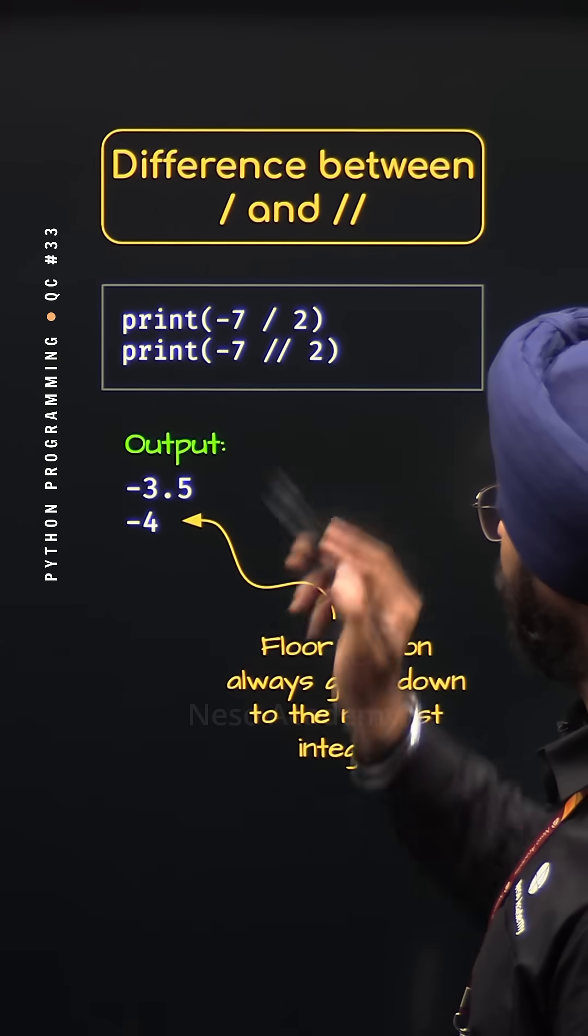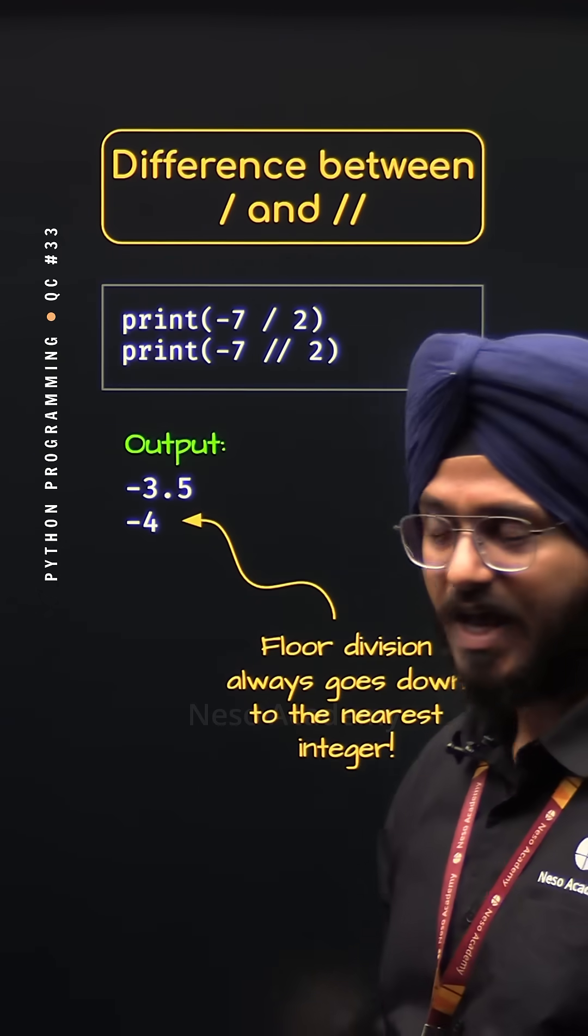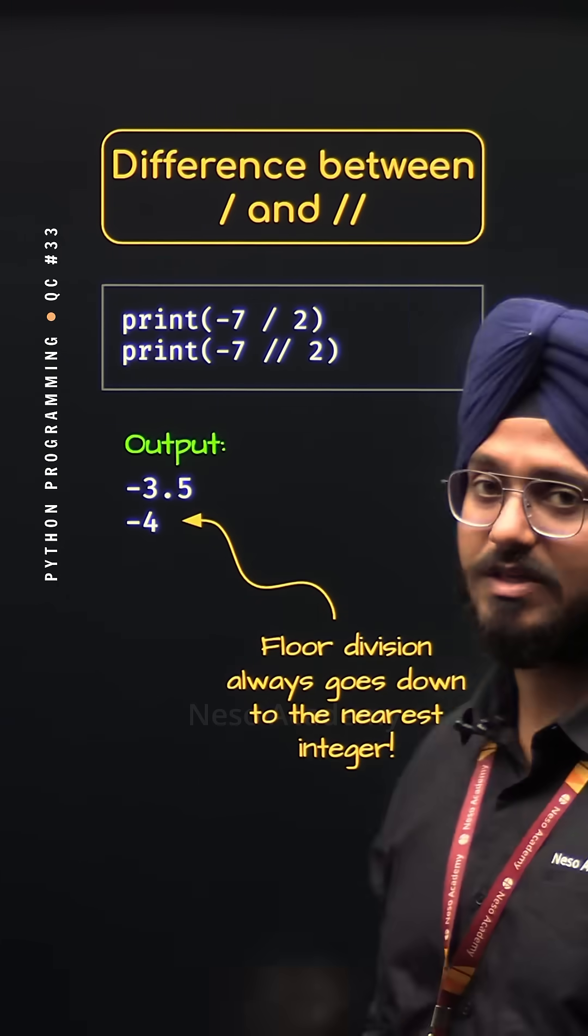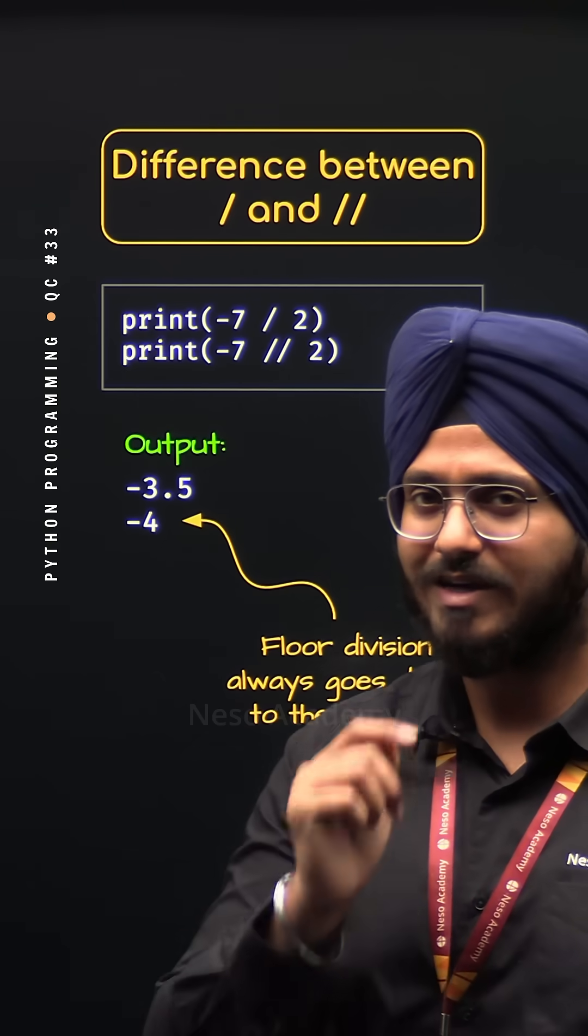When we divide minus 7 by 2, we get minus 3.5. Now if we go down to the nearest integer, we will get minus 4, not minus 3.